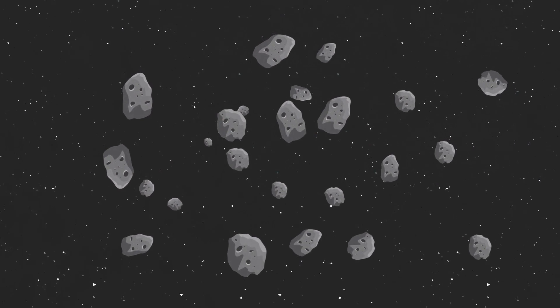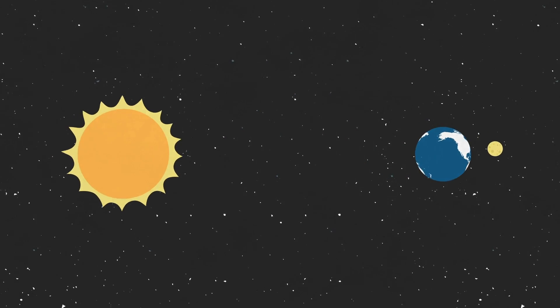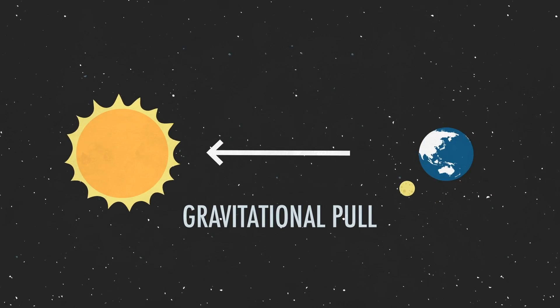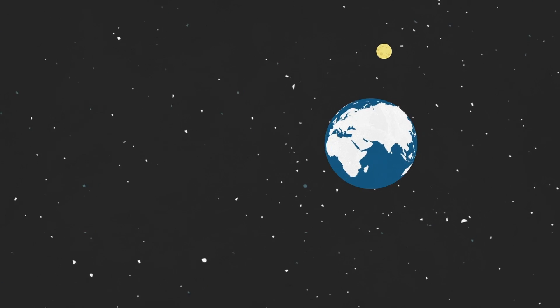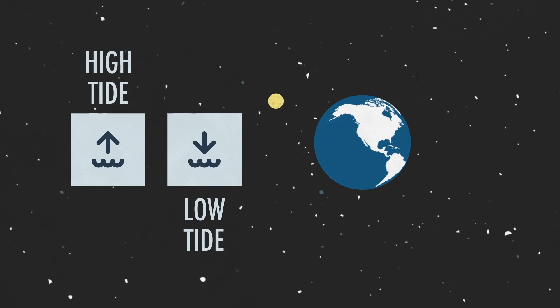Normally in space where there is no friction, an object should retain its momentum forever. But the Earth is subjected to friction from the gravitational pull of the sun and the moon. The moon has a much bigger influence, which can be seen in the way that it causes oceanic tides.